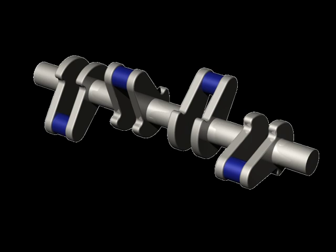In a V engine, each crankpin may serve one or two cylinders, depending on the design.